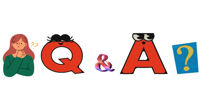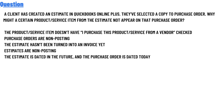Today's question: a client has created an estimate in QuickBooks Online Plus. They have selected 'copy to purchase order,' but certain product and service items from the estimate do not appear on their purchase orders. The product/service item does not have 'I purchase this product/service from a vendor' checked.